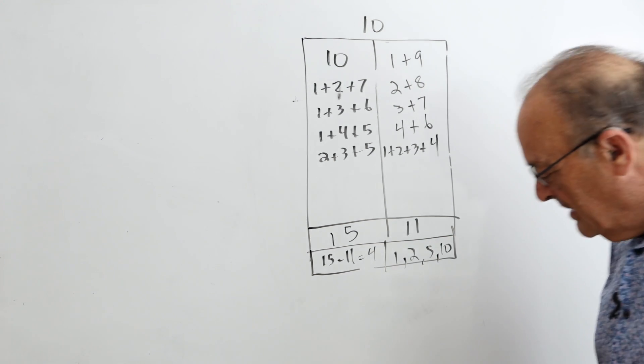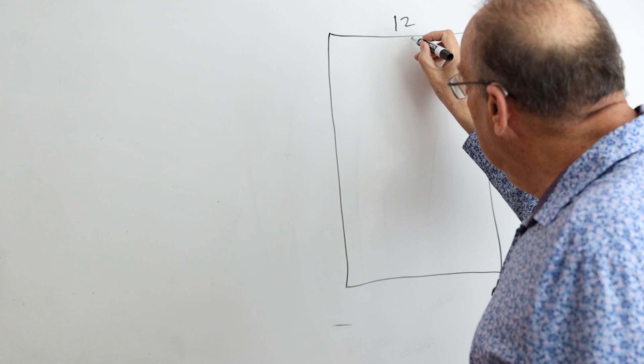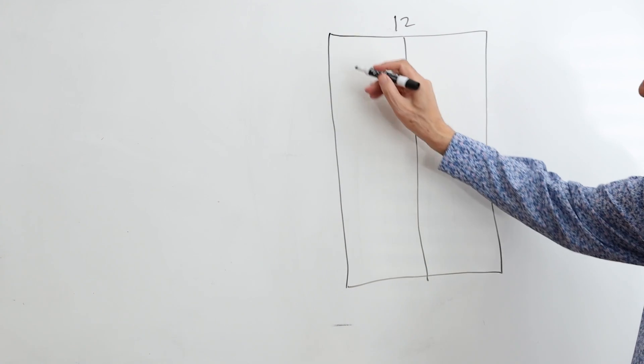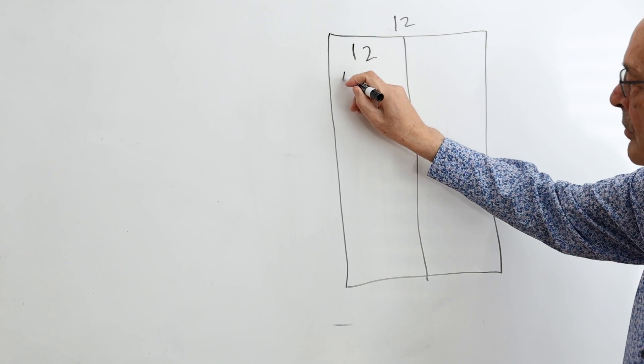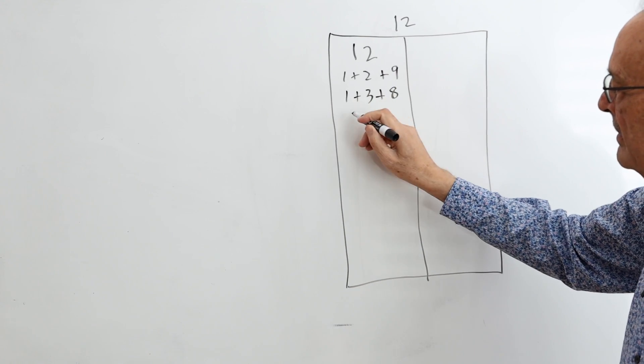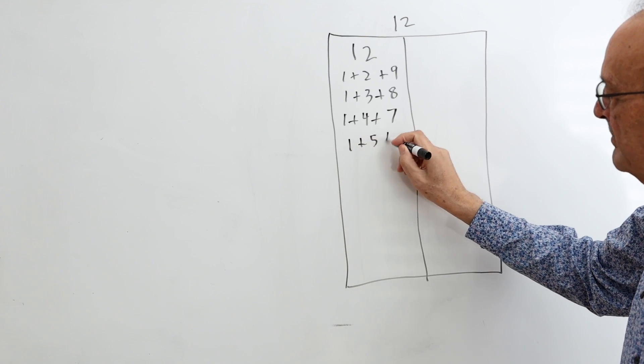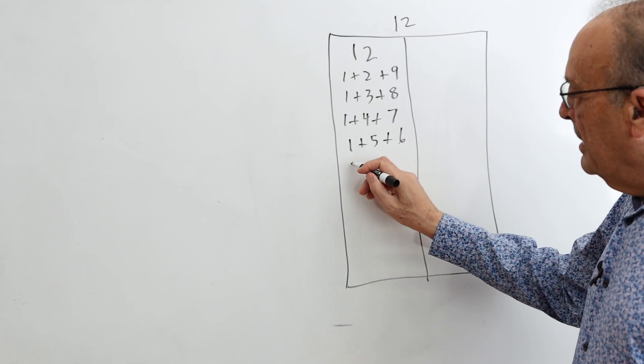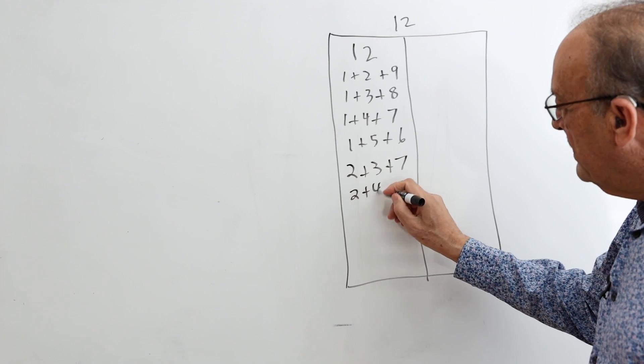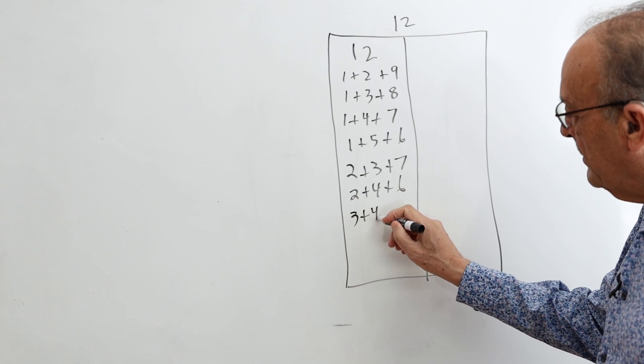So let's do maybe one more example. Let's jump up to 12. So with 12, we can write it as 12, 1 plus 2 plus 9, 1 plus 3 plus 8, 1 plus 4 plus 7, 1 plus 5 plus 6, 2 plus 3 plus 7, 2 plus 4 plus 6, and then we can go 3 plus 4 plus 5.